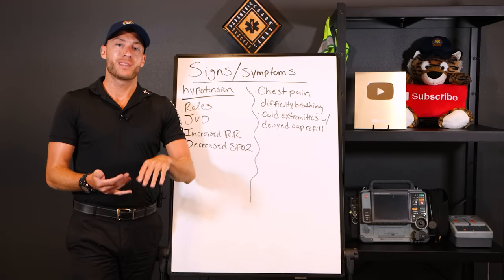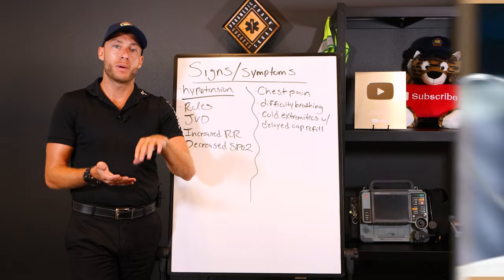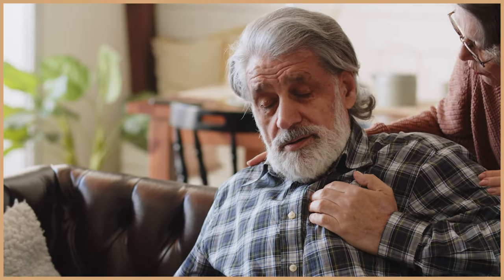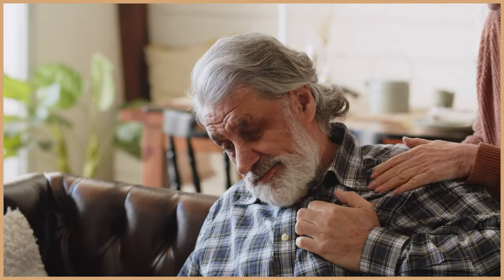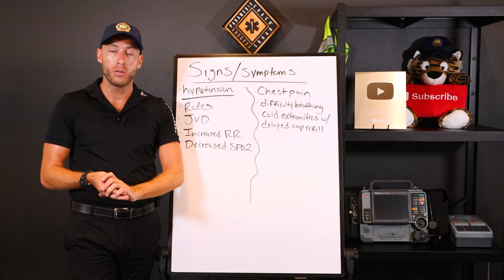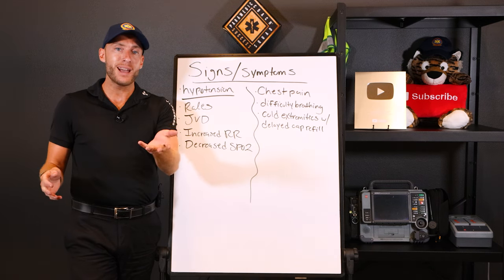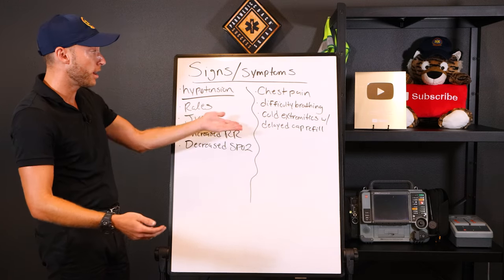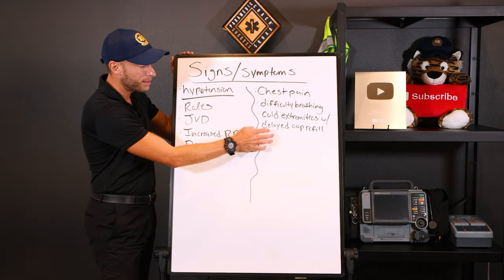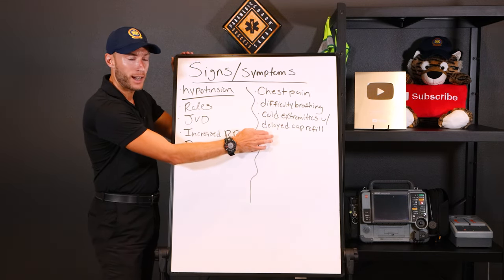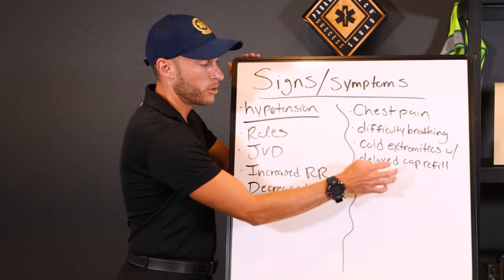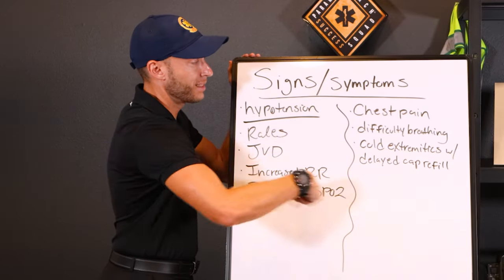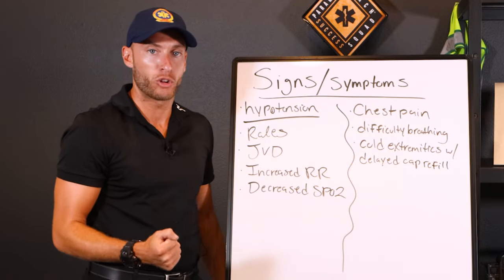So we have a patient whose oxygen levels are low, breathing at a faster rate, with chest pain and difficulty breathing, and low blood pressure. There could also be nausea and vomiting — one of the causes is a heart attack, so that makes sense. What's going to clue you in on shock? Cold extremities with late cap refill, combined with hypotension and these signs and symptoms — that's cardiogenic shock.